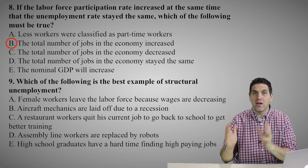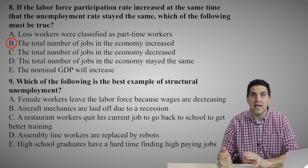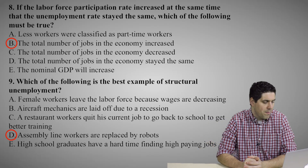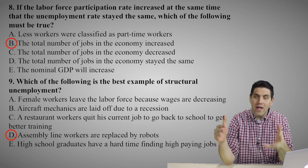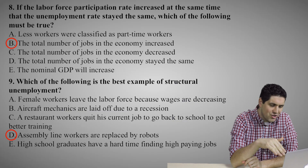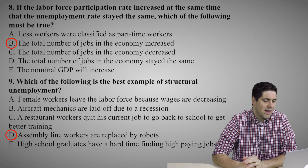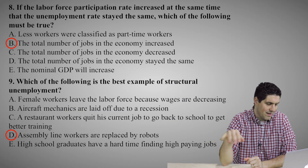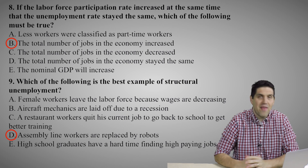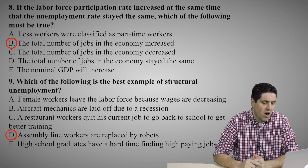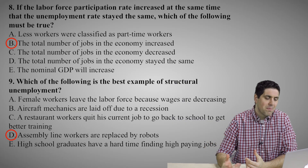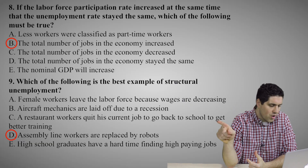Question nine — structural unemployment means the structure of the labor force has changed and certain jobs become obsolete or are replaced by robots. The right answer is D — assembly line workers replaced by robots. For A, a female worker leaving because wages are decreasing — we have no information that the labor is obsolete. B — aircraft mechanics laid off during a recession — that's cyclical unemployment. C — a restaurant worker quitting to go back to school — that's not caused by a structural change in the labor force. E — high school graduates having a hard time finding a high-paying job — that's not the right answer for structural unemployment. The right answer, no doubt, is D.